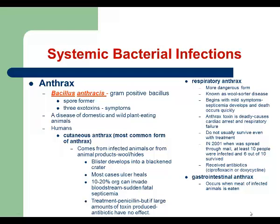The next systemic bacterial infection is anthrax. Anthrax is caused by Bacillus anthracis, which is a gram-positive bacillus. Bacillus anthracis has the ability to form endospores, and in this form it can be found on the surface of certain plants — for example, roses can be a source of anthrax in nature — or on the surface of domestic animals. You also have to remember that Bacillus anthracis has the ability to produce very powerful exotoxins — actually, three different exotoxins.